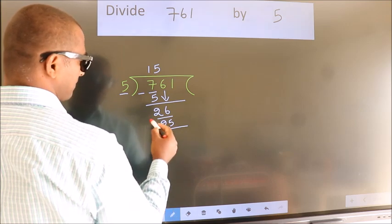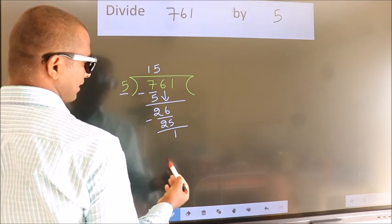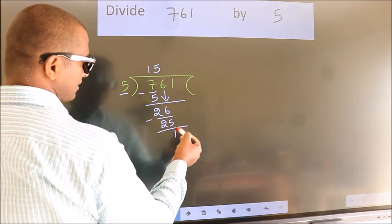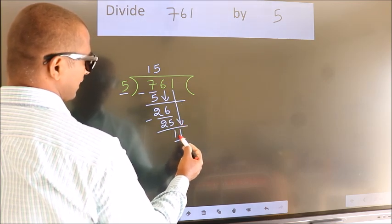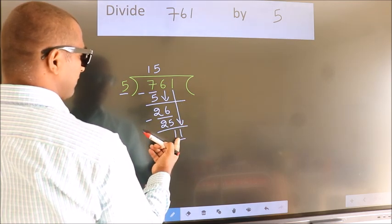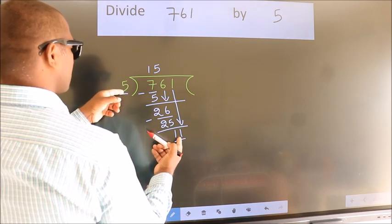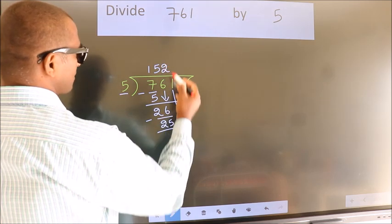Now we subtract. We get 1. After this, bring down the beside number. So 1 down, making 11. A number close to 11 in the 5 table is 5 twos 10.